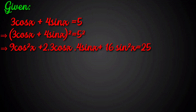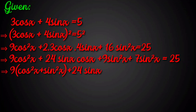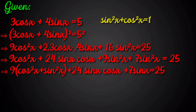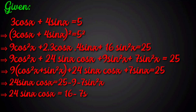So 9cos²(x) + 24sin(x)cos(x) + 9sin²(x) + 7sin²(x) = 25. This implies 9(cos²(x) + sin²(x)) + 24sin(x)cos(x) + 7sin²(x) = 25. Since sin²(x) + cos²(x) = 1, we can write: 24sin(x)cos(x) = 25 - 9 - 7sin²(x), which implies 24sin(x)cos(x) = 16 - 7sin²(x). We label this as equation (1).